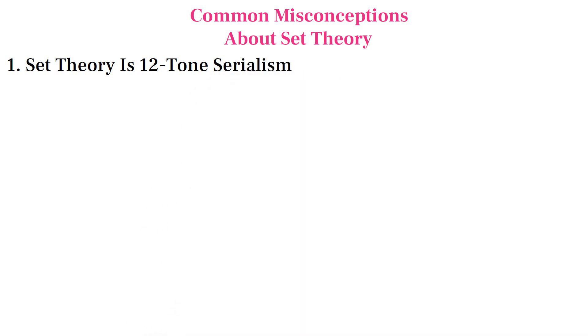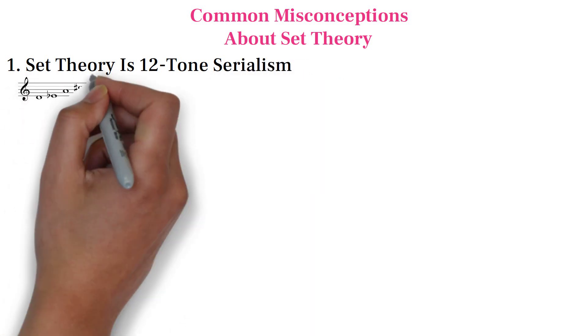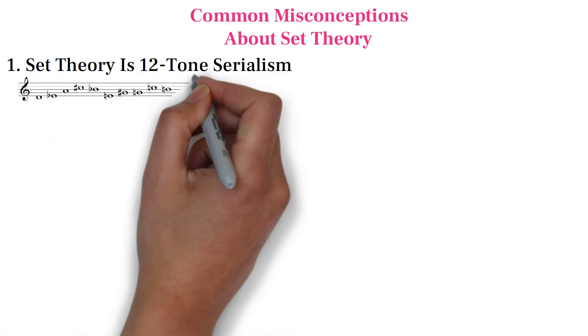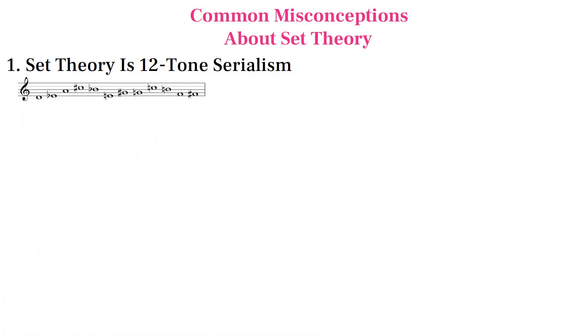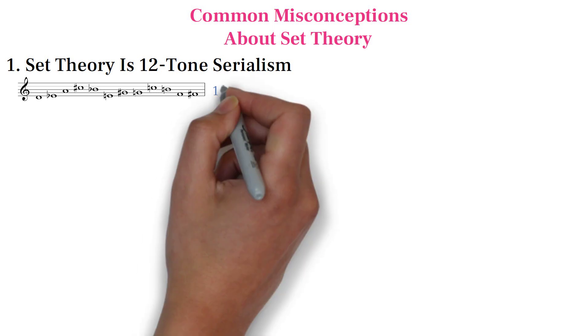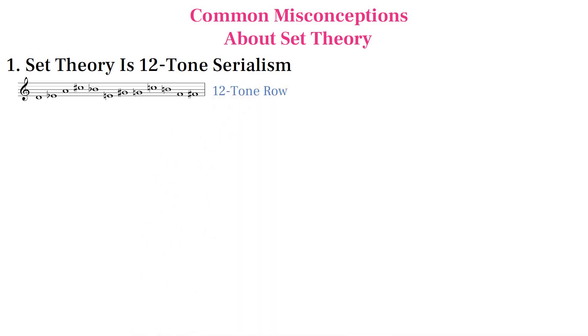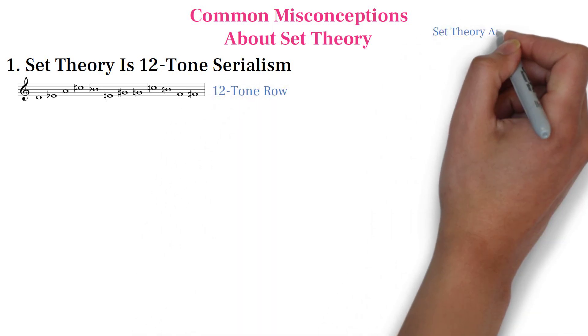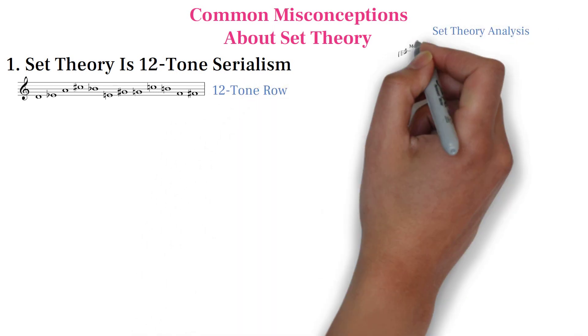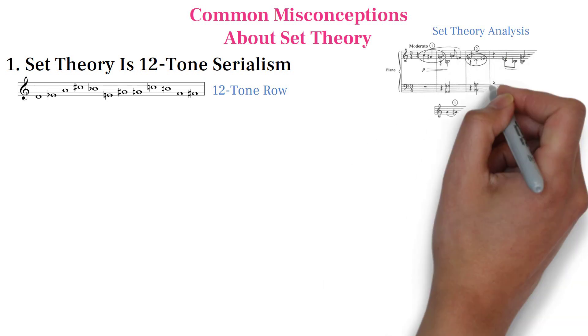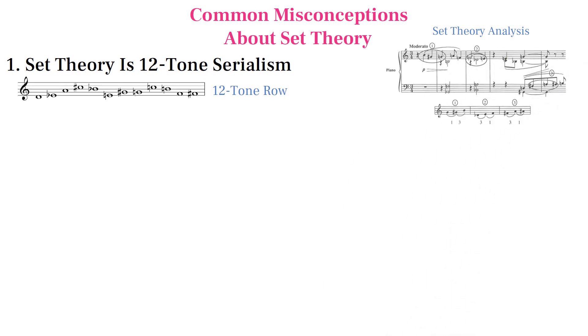Misconception: Set theory is 12-tone serialism. While they both have to do with atonal music, the 12-tone system is about using all 12 tones, while set theory is about labeling and understanding a particular group of pitches.